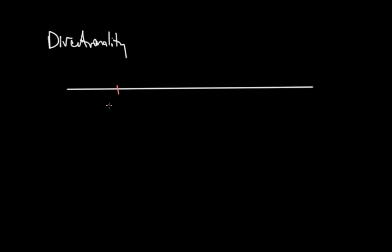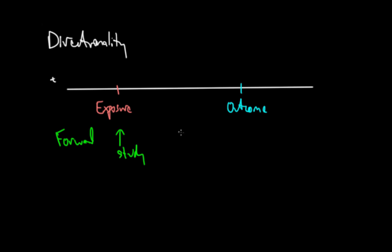Let's say hypothetically that we have some kind of exposure — say, smoking cigarettes — and the outcome is the development of lung cancer, along a timeline T. In a study with forward directionality, the exposure is known before the outcome, and the study progresses forward in time to see whether individuals develop the outcome of interest. For example, you might have 10 patients who smoke cigarettes; when the study begins you know they smoke but none have developed disease, and you follow them to see how many develop lung cancer and how many don't.